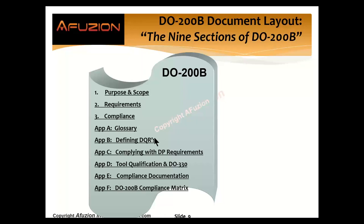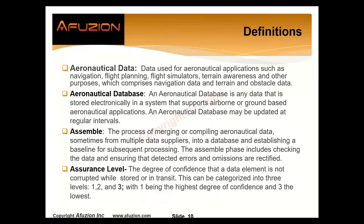How to define the DQRs, data quality requirements. How to comply with the DP, data processing requirements. How to consider tool qualification — will you trust the tool? Only if you qualify it or review that tool's output. How do you comply, and what are the compliance matrix items? How do we get a LOA, letter of approval?